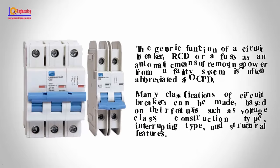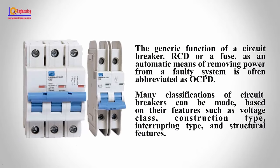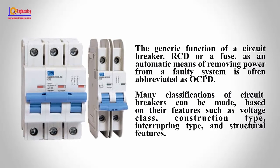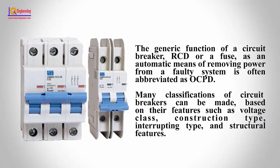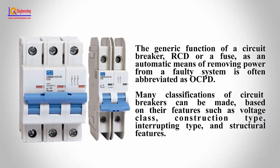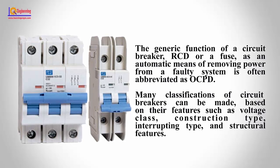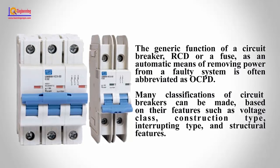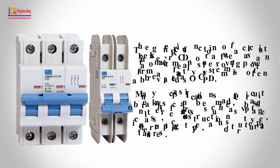The generic function of a circuit breaker, RCD, or fuse as an automatic means of removing power from a faulty system is often abbreviated as OCPD. Many classifications of circuit breakers can be made based on their features such as voltage class, construction type, interrupting type, and structural features.